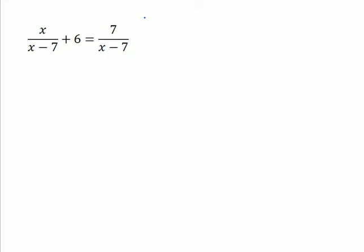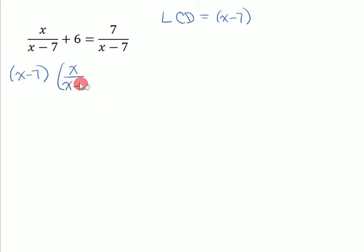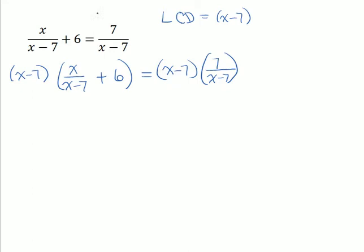In this case, there is only one denominator that's not one, and that is x minus seven. So we're going to multiply both sides of this equation by x minus seven. We have to multiply x over x minus seven by x minus seven, multiply six by x minus seven, and multiply seven over x minus seven by x minus seven.